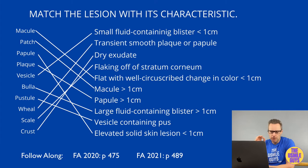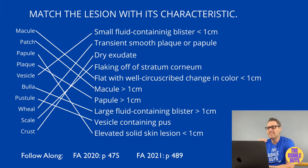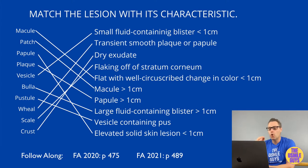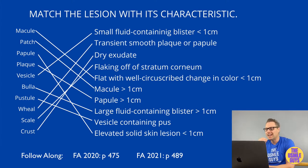A papule is a solid lesion that's less than one centimeter, but it's elevated. A classic example of a papule is the common mole. Next up is a plaque — a papule that's over a centimeter. If you think about the plaque seen in psoriasis, that will give you a clear picture of what a plaque is.